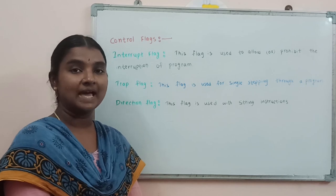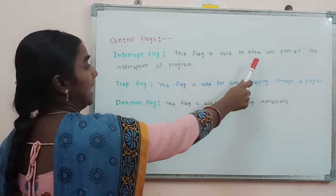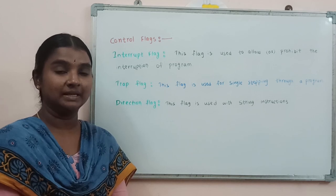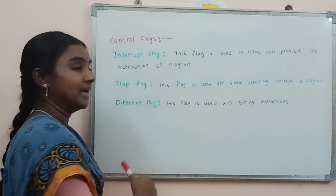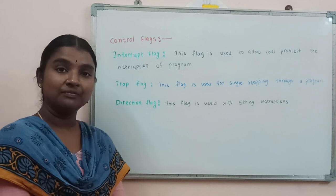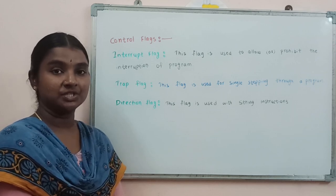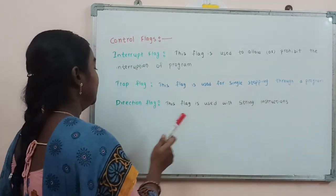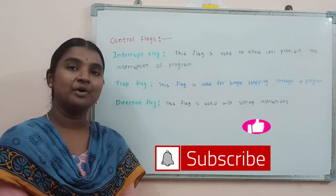Now about the control flags. The interrupt flag is used to allow or prohibit the interruption of the program. If the interrupt flag IF is set to 1, the INTR instruction is accepted; if IF is reset to 0, the INTR instruction is prohibited. The trap flag is used for single stepping through a program. The direction flag is used with string instructions. This concludes the explanation of the flag register.